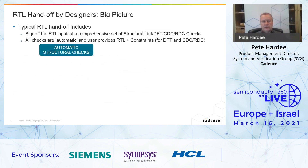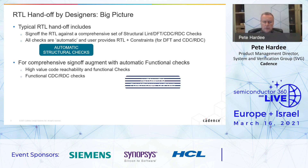Typical RTL handoff includes signing off the RTL against a comprehensive list of structural checks. These will cover lint, design for test checks, clock domain crossing and reset domain crossing checks. All these checks tend to be automatic; the user may need to provide some constraints as well as the RTL — the constraints for DFT checks and CDC and RDC primarily.